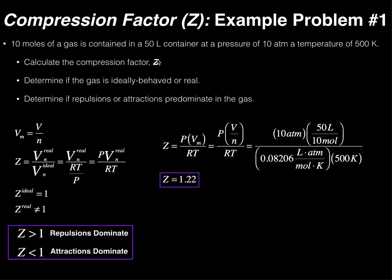Without parameters A and B, you have to calculate the compression factor this way. If Z were less than 1, attractions would dominate. Here Z is 1.22 — greater than 1 — therefore repulsions dominate. Hopefully this made sense. Please like this video and subscribe to my channel for future videos and notifications. Thank you very much.